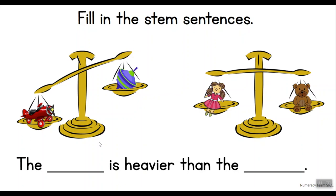What toys do we have here? We have a plane and the top. What do we notice? The pan holding the plane went down whereas the pan with the top went up. So which one is heavier, the plane or the top?